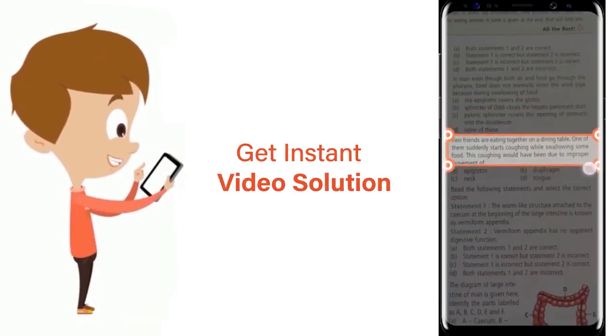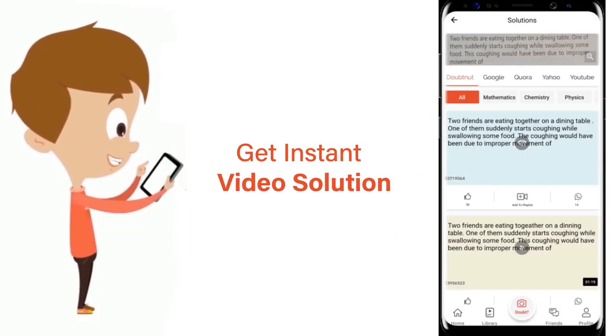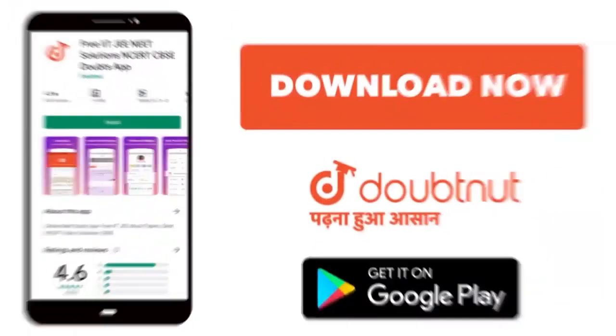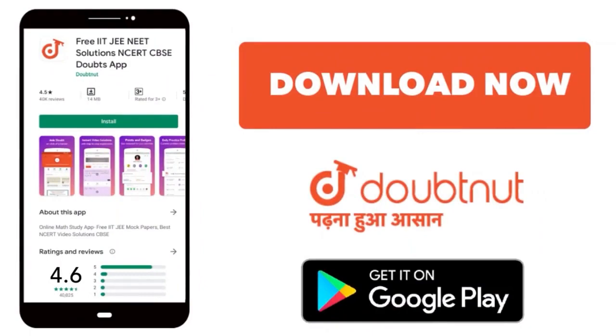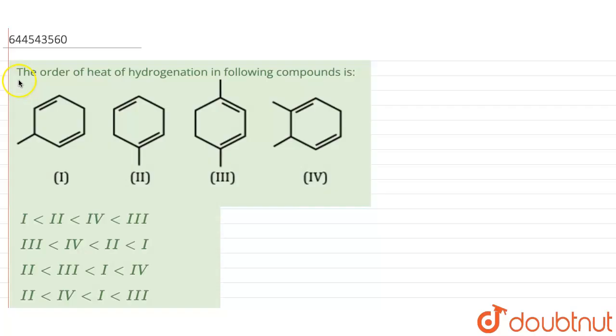In this question, it is given that we need to find the order of heat of hydrogenation in the following compounds. When we talk about the following compounds, dienes are given.